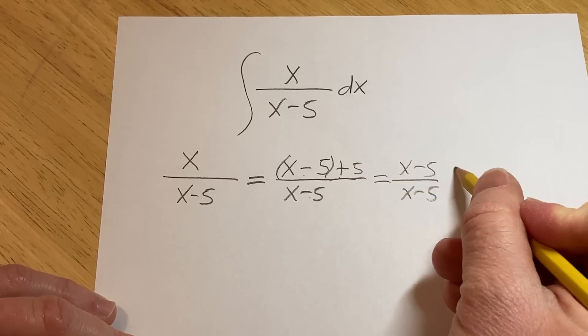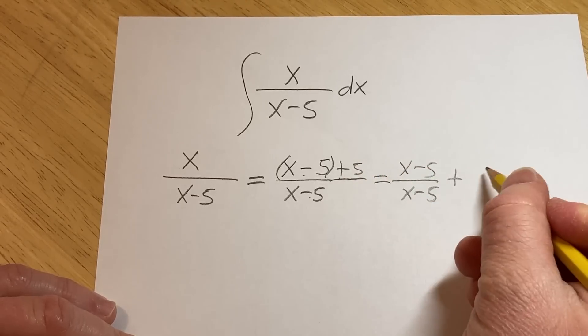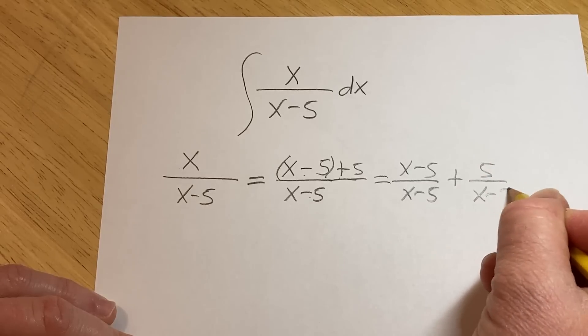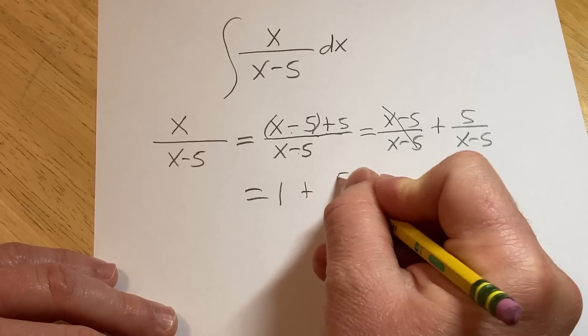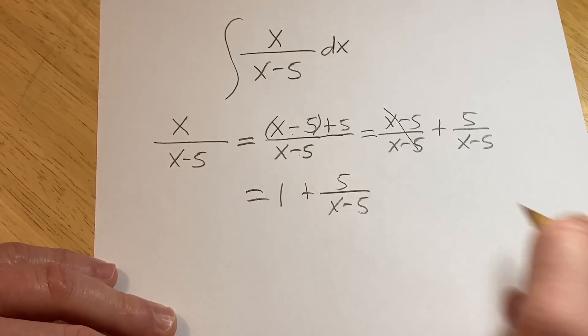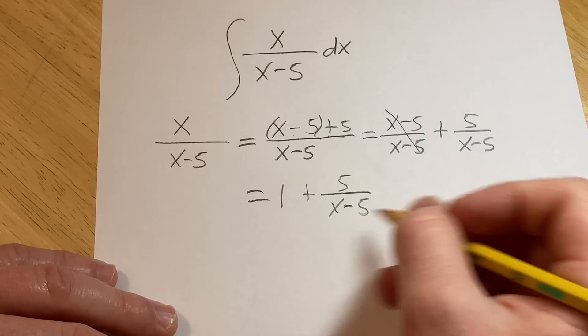And then plus 5 over x minus 5. Like that. Really nice. These cancel so you get 1 plus 5 over x minus 5. Okay, so now this is easier to integrate.